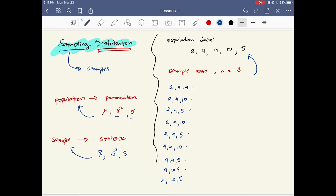The hardest thing about sampling distribution is enumerating all possible samples. So each group there, we call it a sample, and its size is 3. So let me just check if our samples are complete: 2, 4, 9; 2, 4, 10; 2, 4, 5; 2, 9, 10; 2, 9, 5; 2, 10, 5; 4, 9, 10; 4, 9, 5; 9, 10, 5; and 4, 10, 5.